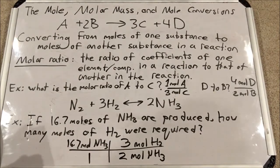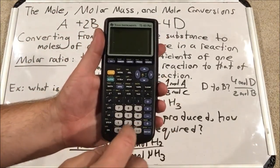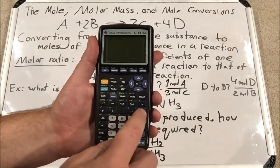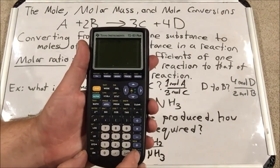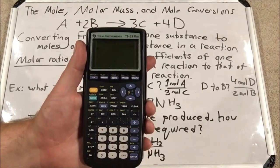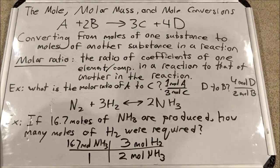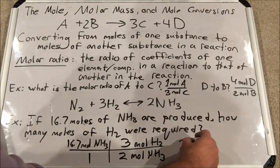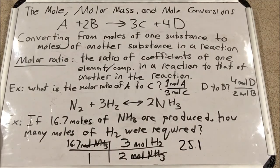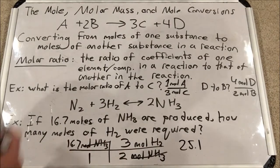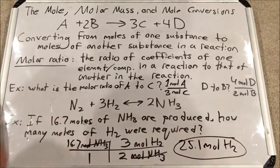I multiply 16.7 by 3, then divide by 2 — going straight across with order of operations on the calculator. I get 25.05. I had three sig figs to begin with, so I round to three sig figs: 25.05 becomes 25.1. After canceling units, I have moles of H2 left. So 25.1 moles of H2 was required to produce that many moles of NH3.